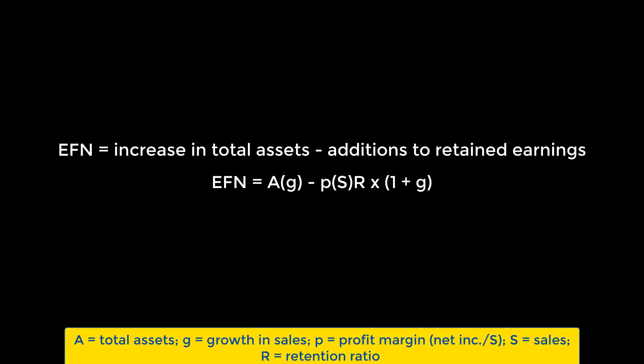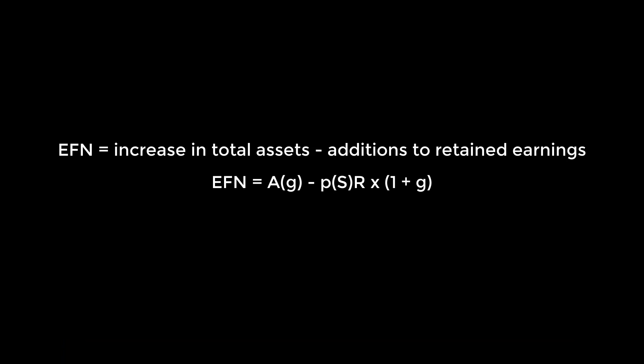This idea as a formula looks like this, where A represents total assets, G is the growth rate of sales, P is the profit margin, S is the previous year's sales, and R is the retention ratio. If you're more of a visual learner and like to establish relationships by graphing them out, we can restate the equation so that it looks a lot like an equation for a line, y equals mx plus b.